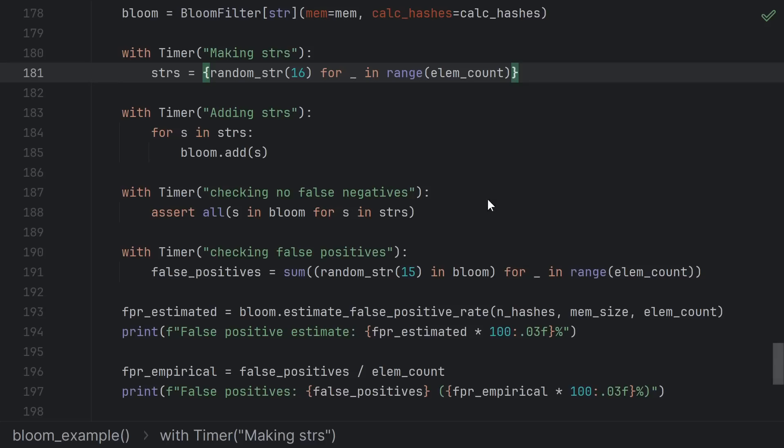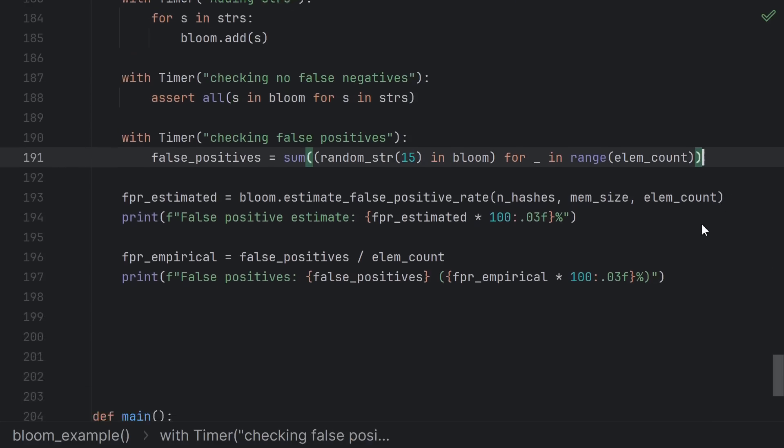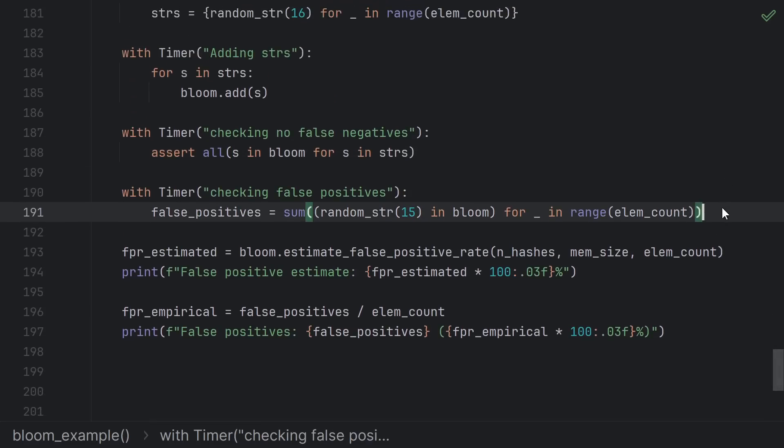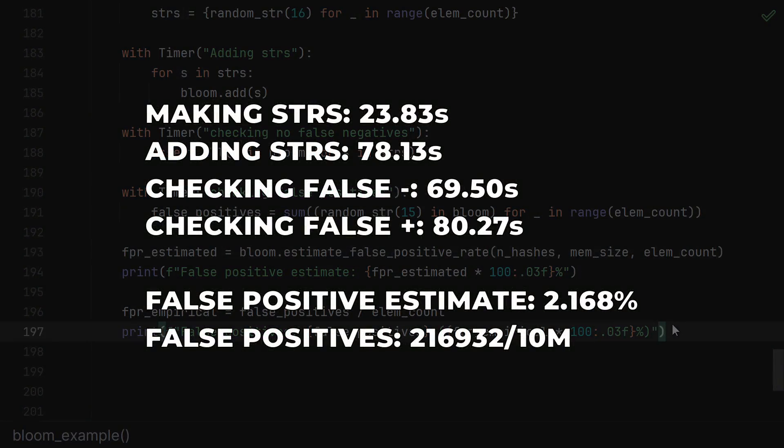Just to check our implementation, we assert that there are no false negatives, meaning that everything that we did add returns true when we check whether it's there. Then we count false positives by querying an equal number of strings that were not added to the filter and compare with the estimated false positive rate based off our mathematical analysis. Amazingly, we find a 2.169% false positive rate which is stunningly close to the estimated 2.168% estimate. Everything was completely random and yet we predicted the answer with great precision. Probability is pretty cool.